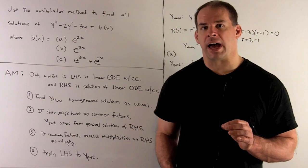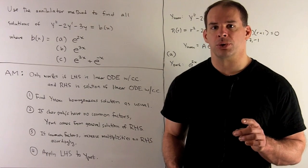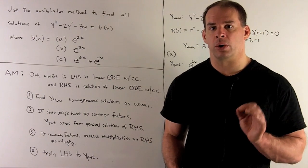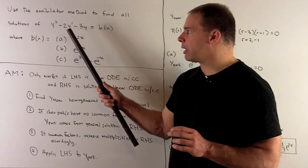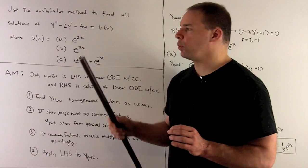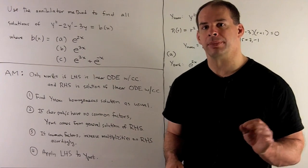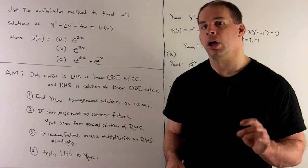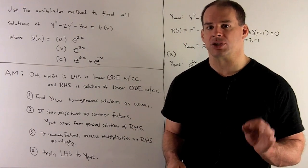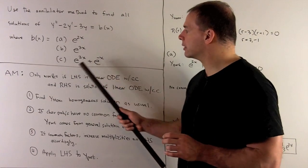Using the method of annihilators, we'll find solutions to the linear ODE y'' - 2y' - 3y = b(x), where b(x) is one of the following three functions.